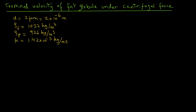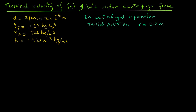Now we will consider a case where we use centrifugal force. On the next screen, we have the data on the diameter of the fat globules, the density of the fluid, the density of the particles (the fat globules), and the viscosity of the milk serum — same as in the previous example. In the centrifugal separator, the radial position considered is R = 0.2 meters, and the rotational speed is n = 5000 revolutions per minute.